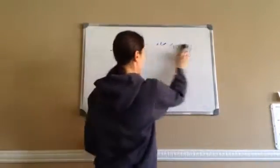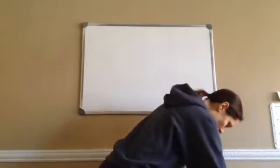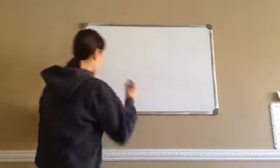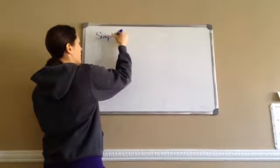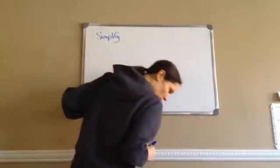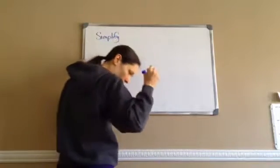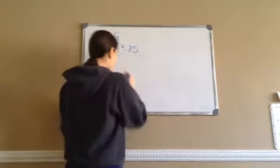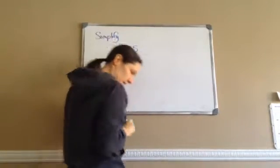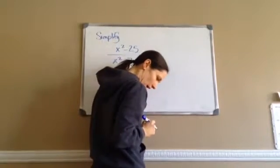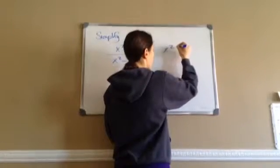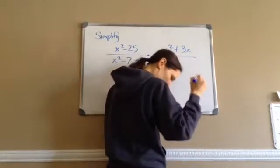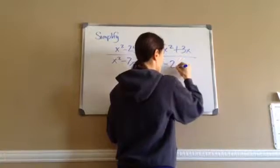Now knowing that you can cancel out any numerator with any denominator, let's move on to the lesson. Because this looks really hard. Here's what it says. Let's simplify: x squared minus 25 over x squared minus 7x times all of that times x squared plus 3x over x squared minus 2x minus 15.